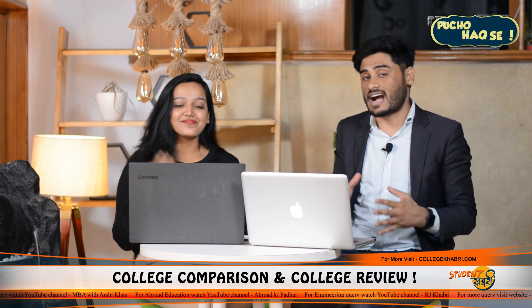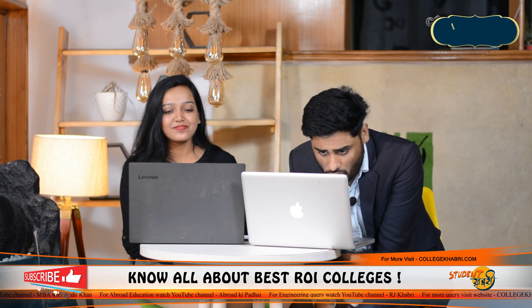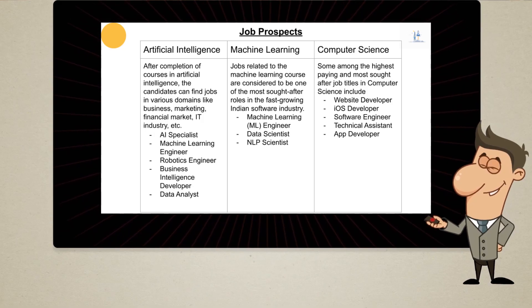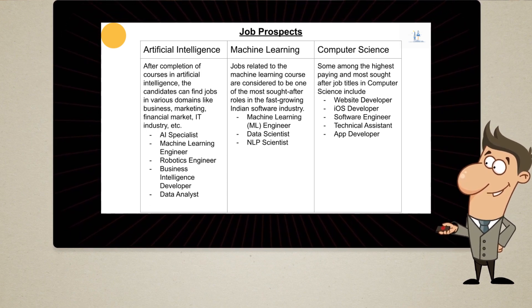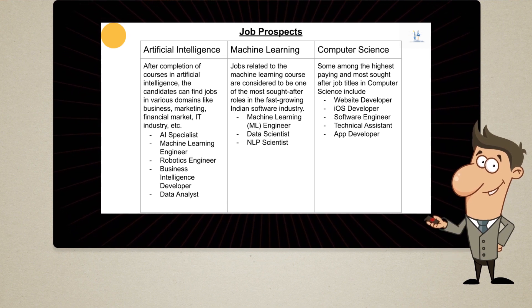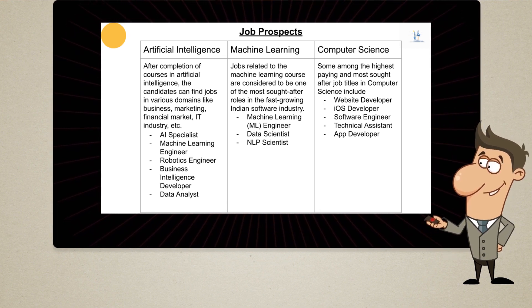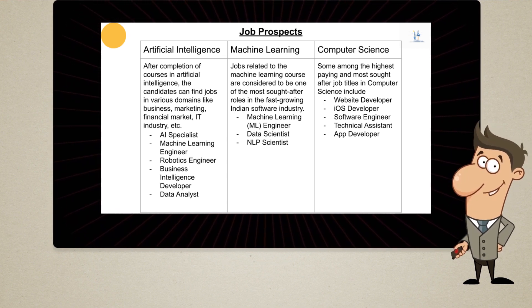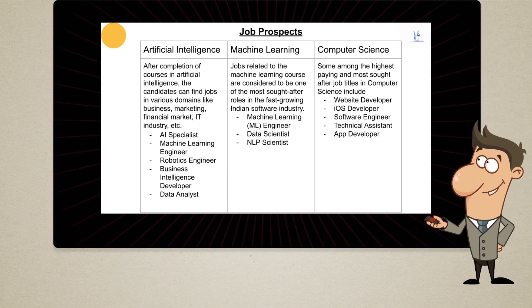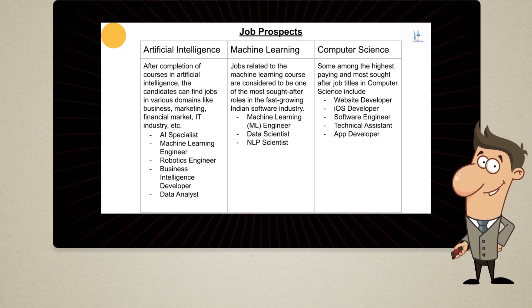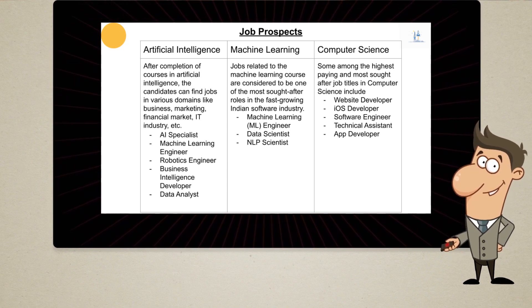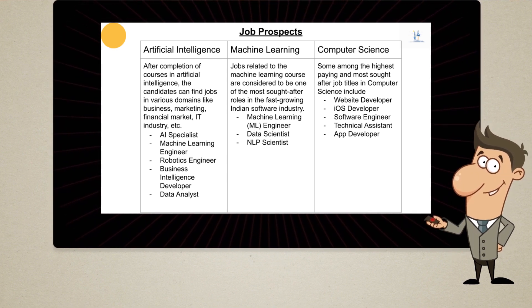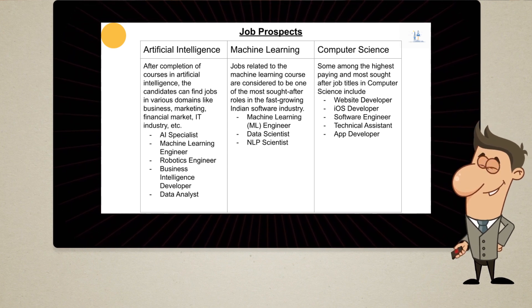For job opportunities, in AI you can become an AI specialist, machine learning engineer, robotic engineer, data analyst, or business intelligence developer. In machine learning, you can work as an ML engineer, data scientist, or NLP scientist. In computer science, roles include website developer, app developer, iOS developer, software engineer, and technical assistant.